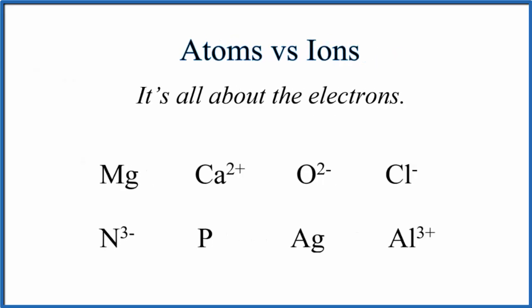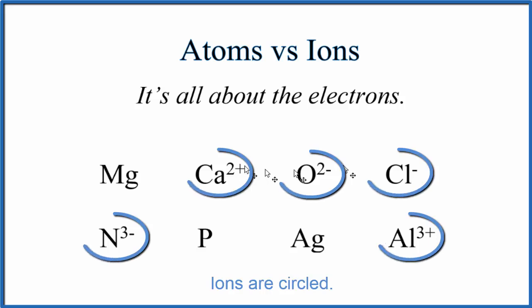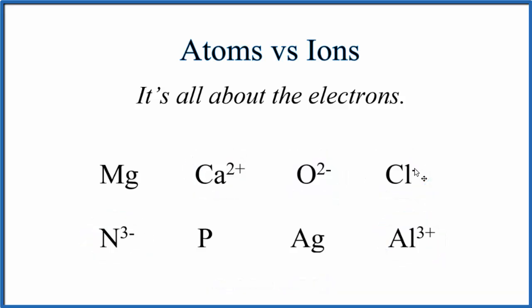So pause and determine which of the following are ions and which are neutral atoms. So if you have a plus or minus after them, they're going to be ions. If there's nothing written, that's a neutral atom. And the number of protons will equal the number of electrons. And if you have just a minus, that means it's one minus.